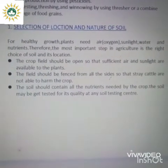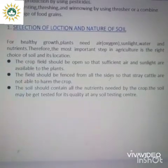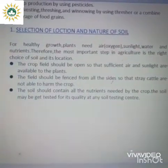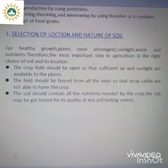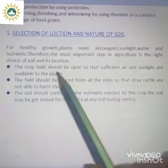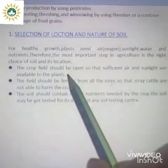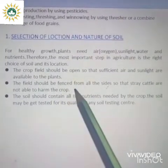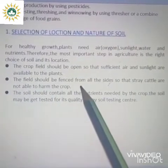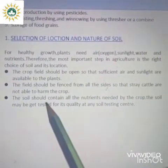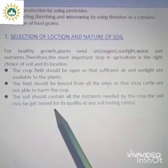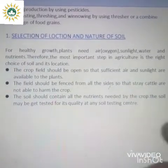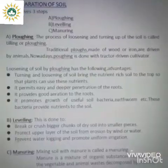Number one is selection of location and nature of soil. For healthy growth, plants need air, sunlight, water and nutrients. Therefore the most important step in agriculture is the right choice of soil and its location. A crop field should be open so that sufficient air and sunlight are available. The field should be fenced from all sides so that stray cattle cannot harm the crop. The soil should contain all the nutrients needed by the crop and may be tested for quality at a soil testing center.